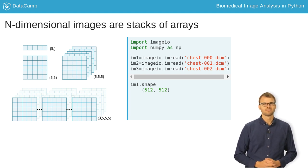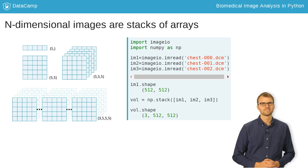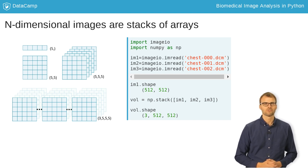Now, we can feed a list of these three images into NumPy's stack function to create a 3D volume. If we look at our new vol array, we see that it contains a third dimension with three elements along it, but the row and column dimensions are the same as before.